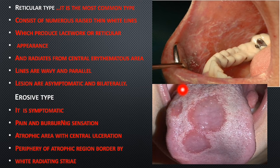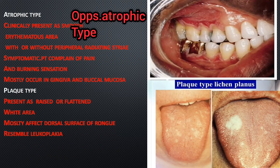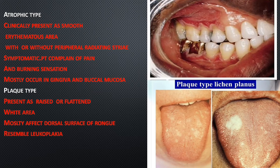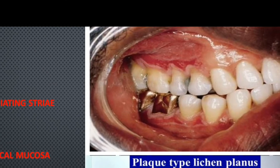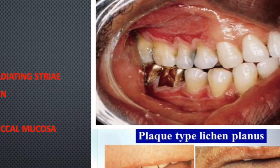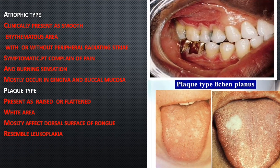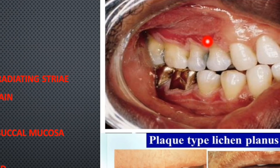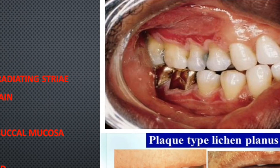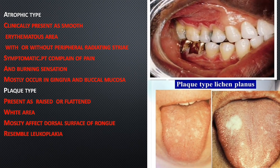The atrophic type presents clinically as a smooth erythematous area, appearing as a smooth red area as seen in the picture. The erythematous area may or may not have peripheral radiating striae — these white lines may or may not be present. There is a burning sensation as this type is symptomatic, and it mostly occurs on the gingiva and buccal mucosa.